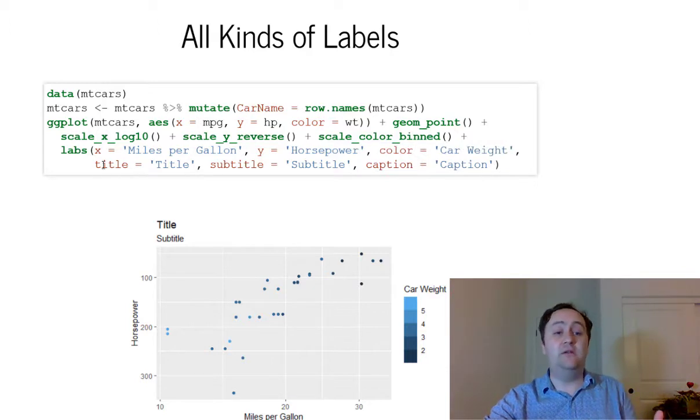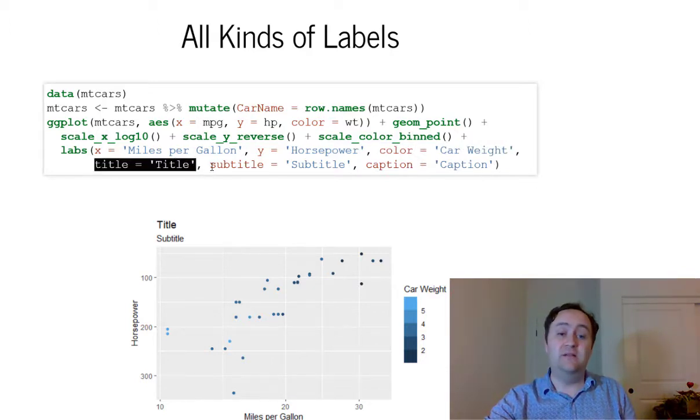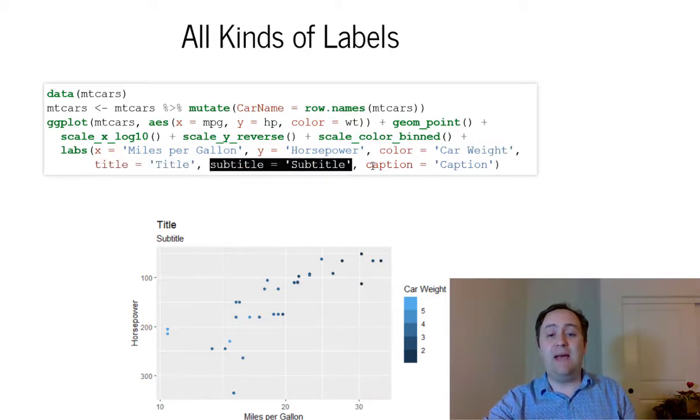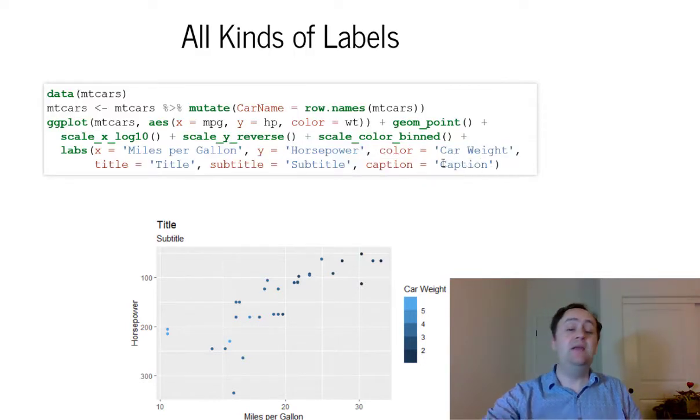We can also, of course, have a title of the graph overall. Title is title, a subtitle, or a caption as well. And it's really as simple as that. If you want to label your axes, and you should, you always want to make sure that your graph is readable and not just in whatever weird name you gave the variable in R, use the labs function, it'll do it.